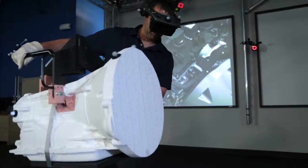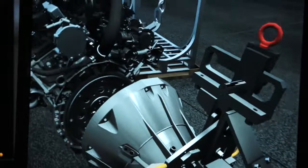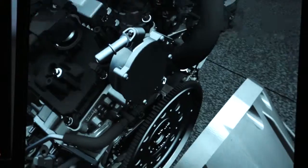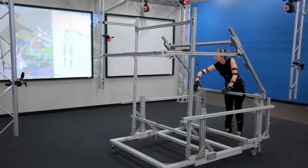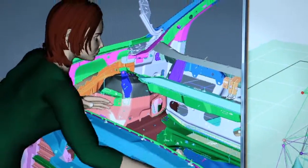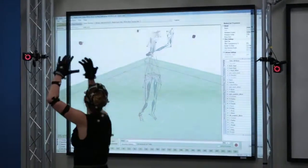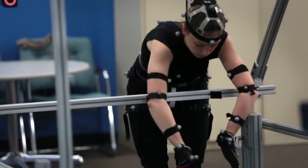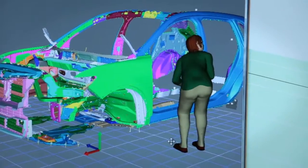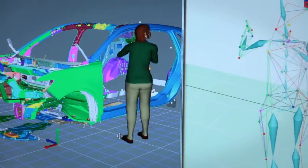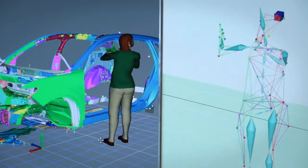So you can put on a head-mounted display and you can stand in front of a partially built-up car and look at it from the perspective that that operator will be seeing it and we can actually have them reach for that part. I can then calculate all their joint angles by tracking their body segments and then we can predict for that posture to put on that part how much strength they would need to do before it became incapable for them.